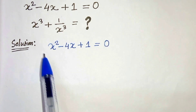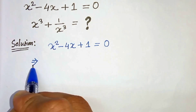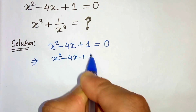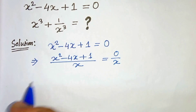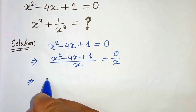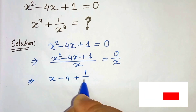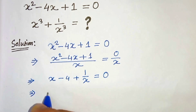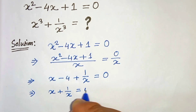What we have to do is divide this equation by x. What we get is: x squared over x is x, minus 4x over x is 4, plus 1 over x, and on the right hand side we get 0. So x plus 1 over x equals 4.